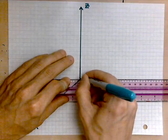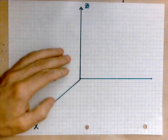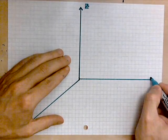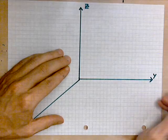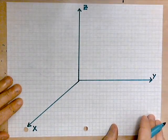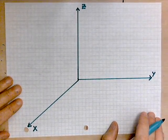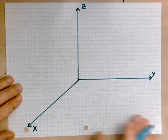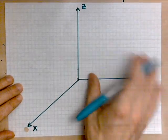And then this one I'm about to draw is the y-axis. So, these are the basics of a three-dimensional coordinate system. X, y, and z.